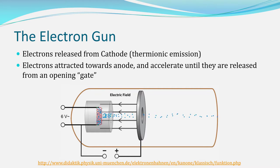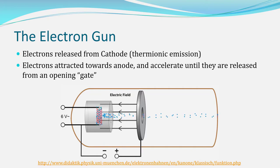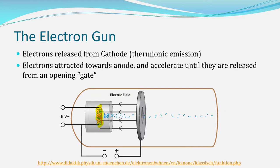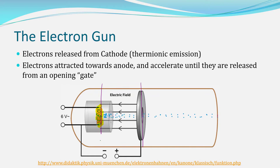The electron gun is a way that we can produce electrons and then get them moving. You've got this hot cathode, and as it heats up it generates free electrons. Then you have an electric field produced by two plates — you can generate an electric field by applying a potential difference across each terminal.